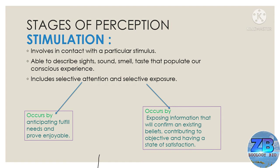Selective exposure occurs by exposing oneself to information that will confirm an existing belief, contributing to objectives and a state of satisfaction. As we are not able to perceive everything happening around us simultaneously, we tend to engage in selective passive perception — perceiving only positive things. For example, after buying a laptop, one tends to read more or ask people around whether the product bought is good, because we want to tell ourselves we made the right decision and avoid negative feedback.